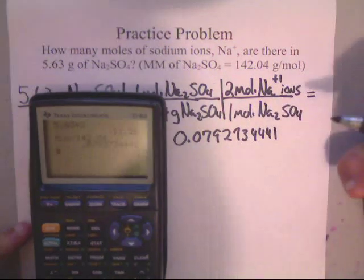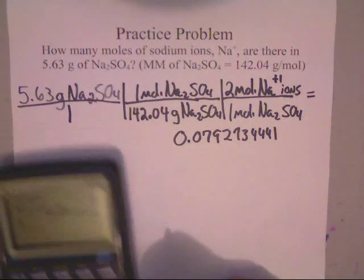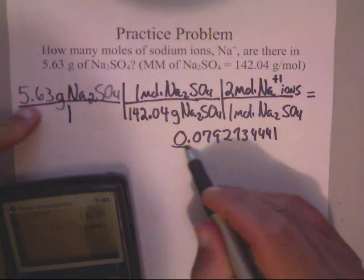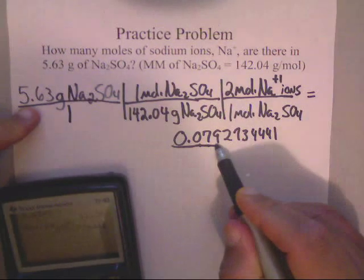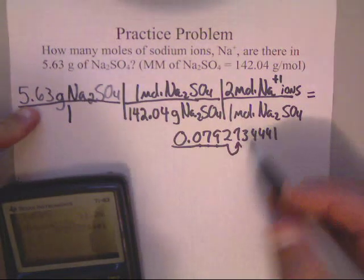0.0792734441. Okay. Now, I don't need all those numbers. I just really need 3 sig figs. These 2 are insignificant, but 1, 2, 3. These are important. Now, that can round.